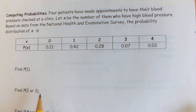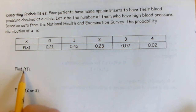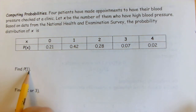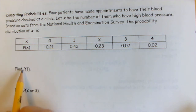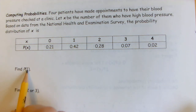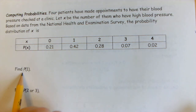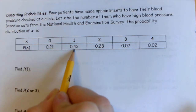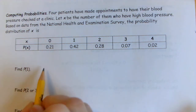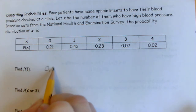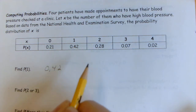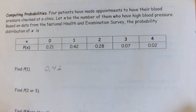Let's answer some questions. What's the probability that one of the patients would have high blood pressure? The notation P(1) means: what is the probability that exactly one patient has high blood pressure? That's listed right there — it's 0.42, or 42%.